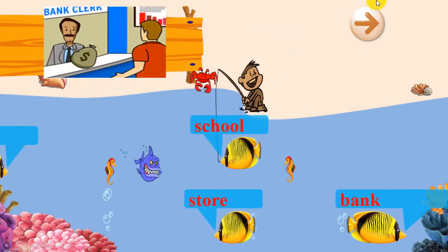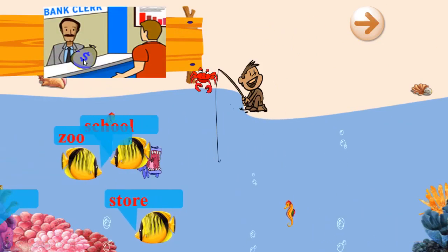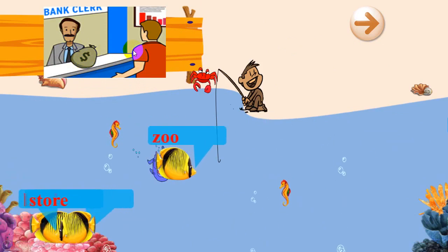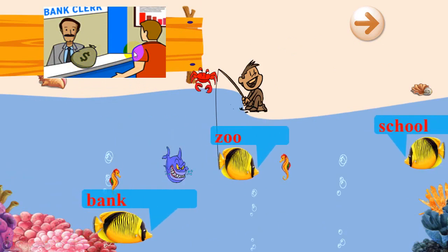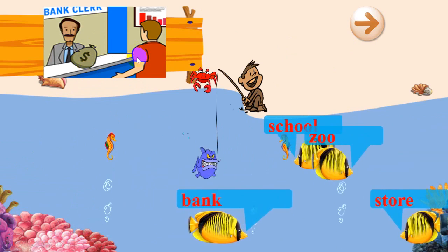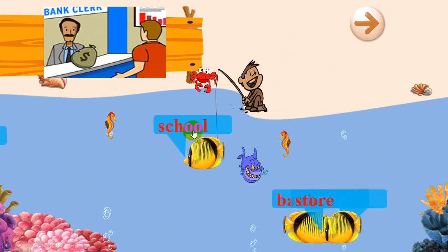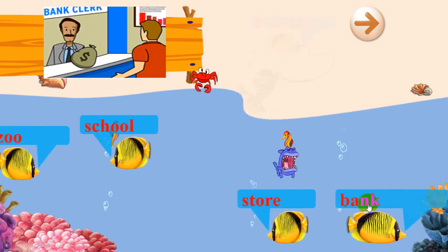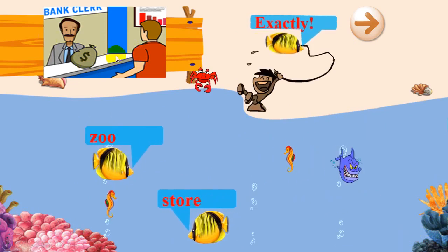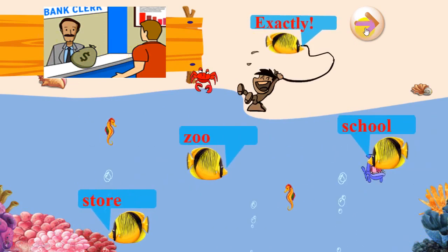I see something that looks like money inside, and two men — they are talking together. So, can you guess which place is it? Where are they? They are in school? No. Maybe they are in a bank. That's right — they are in a bank. Okay, next.